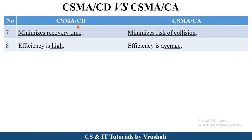In CSMA/CD protocol, they minimize the recovery time, while in CSMA/CA protocol, they minimize the risk of collision. That's why the efficiency of CSMA/CD is high and the efficiency of CSMA/CA is average. This is the basic difference between CSMA/CD and CSMA/CA protocol.